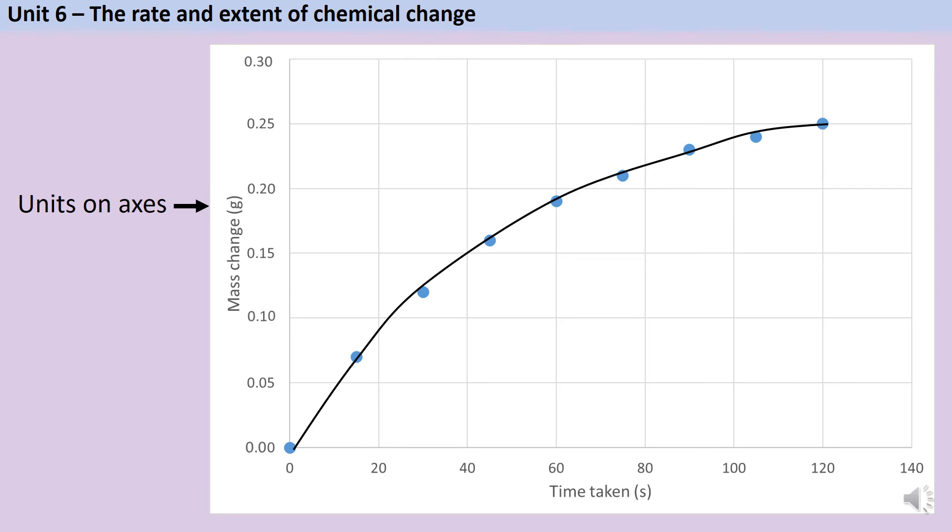I'm not drawing a line that goes exactly dot to dot, it generally shows me the pattern of the data, and I can use this to make predictions about points that I haven't actually got data for. So for instance, if I wanted to predict what the mass change would be after 40 seconds, even though I haven't collected that data, I can use my line of best fit to predict that here, it would probably have been 0.15 grams.